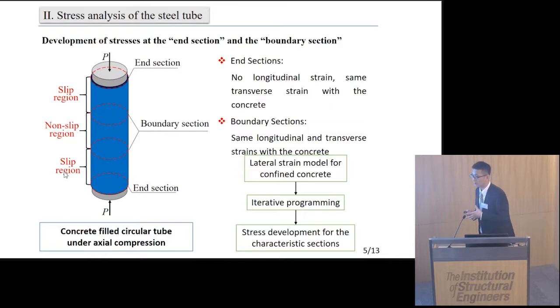In the slip region, frictional stress accumulates along the column height, while in the non-slip region, the frictional stress is assumed to be zero. Based on this division, we can get two characteristic sections: end section and boundary section.